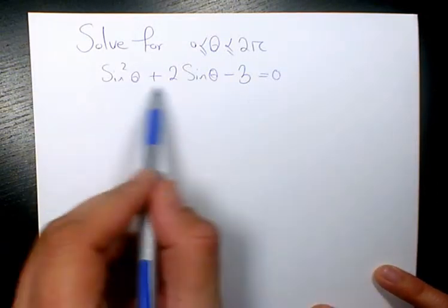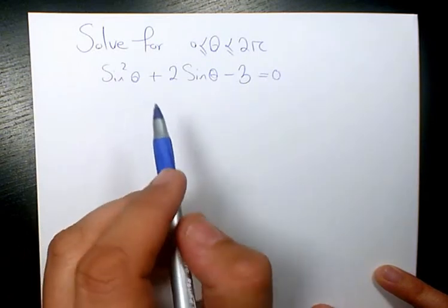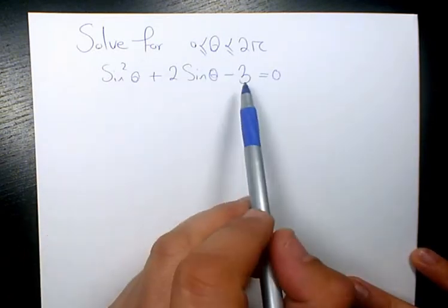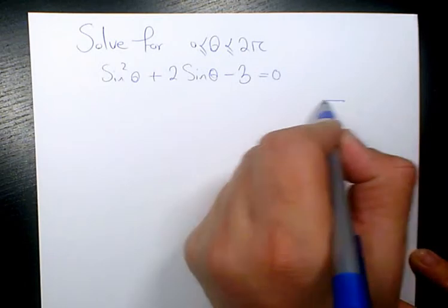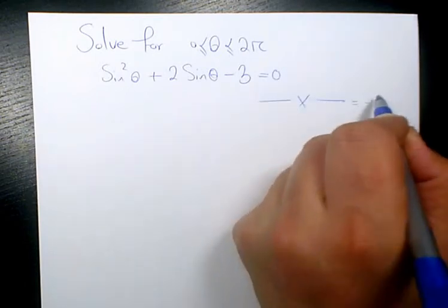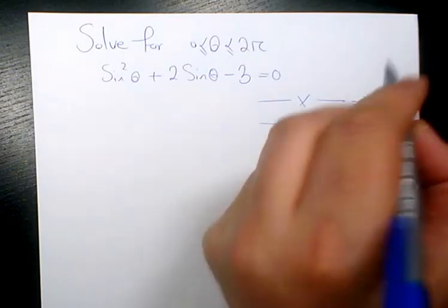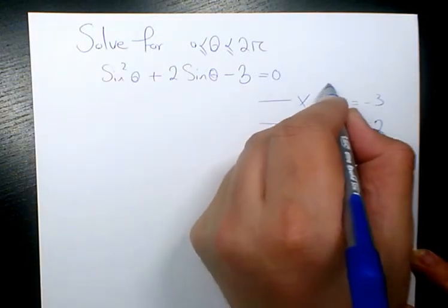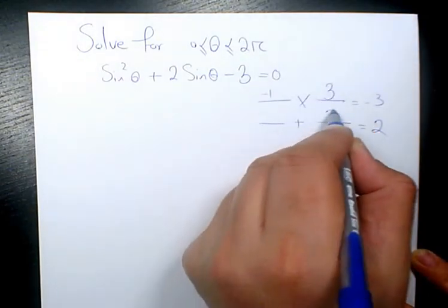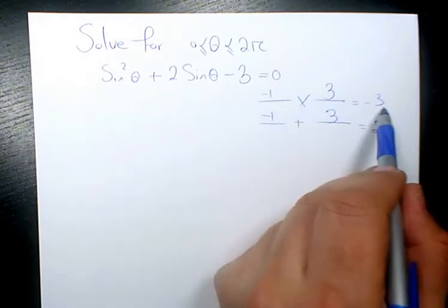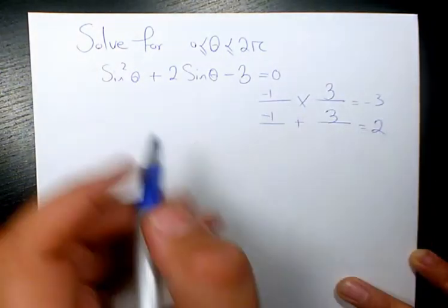So first of all, I'm going to solve this quadratic equation by factoring method. We're looking for two numbers that multiply to negative 3 and add to positive 2. These two numbers are going to be 3 and negative 1. When you multiply, it's negative 3. When you add it, it's positive 2.